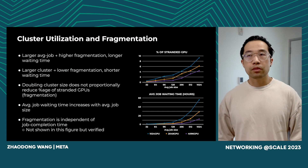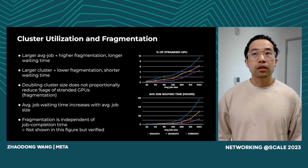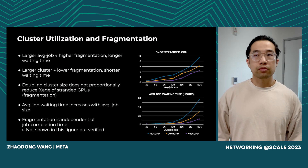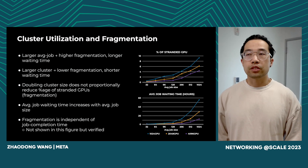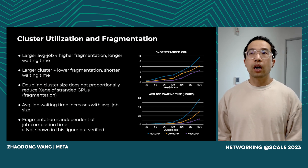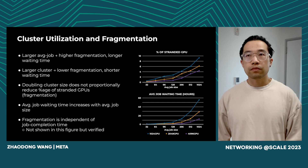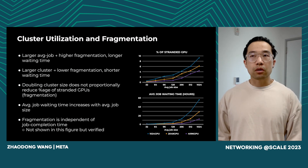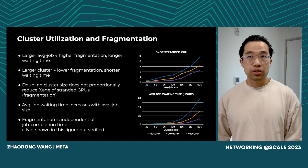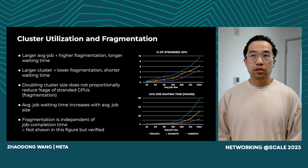Some key takeaways: if the job sizes in the cluster are larger, it tends to have higher fragmentation and longer waiting time, since there will be less chance for a larger training job to find a slot to fit in. For the same reason, if the cluster size is large, the fragmentation will be lower, but the efficiency gain is diminishing as we grow the size. We also observed that the fragmentation of the cluster is not very sensitive to job runtime — a cluster with many long-running jobs versus many short-lived jobs will have similar fragmentation as long as the job size distribution is similar.